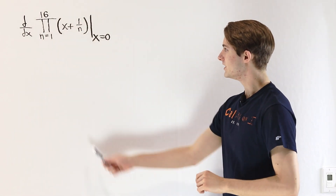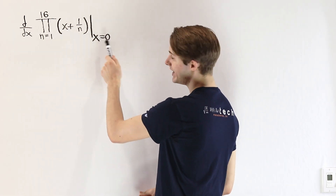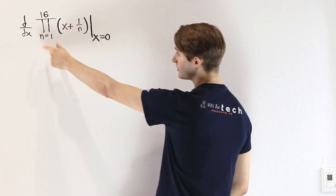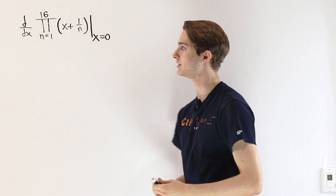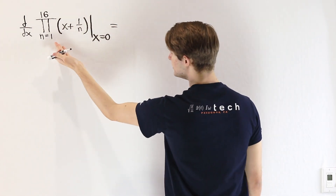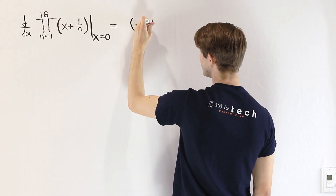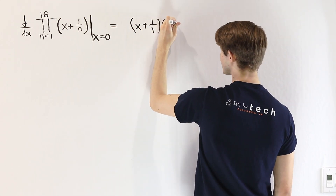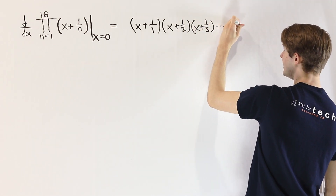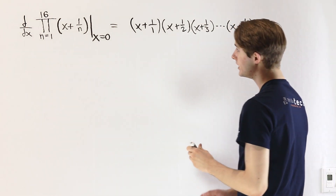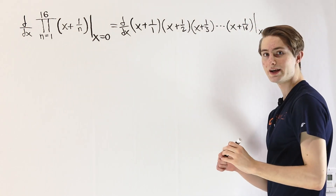We are going to find the derivative of the product from n equals 1 to 16 of x plus 1 over n, evaluated at x equals 0. If you're not familiar with pi notation, this is the notation for a product — basically like sigma for a sum, except we're multiplying things. So this expression is x plus 1 over 1, times x plus 1 over 2, times x plus 1 over 3, and so on until x plus 1 over 16. We want to take the derivative with respect to x and find that value when x equals 0.